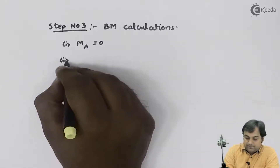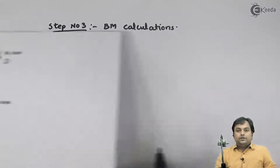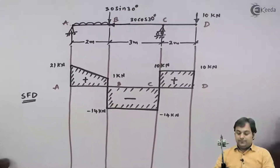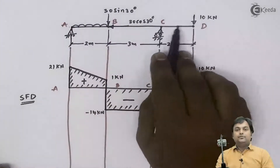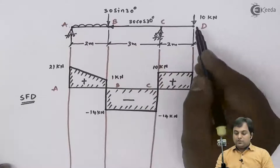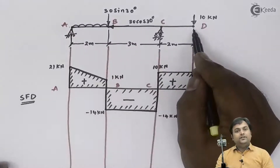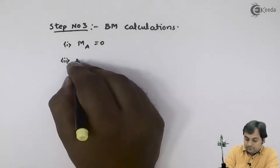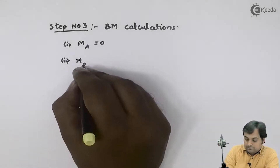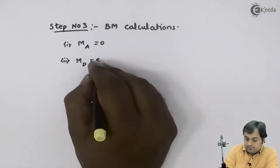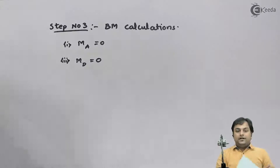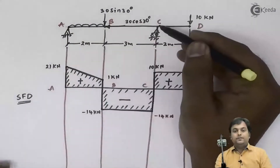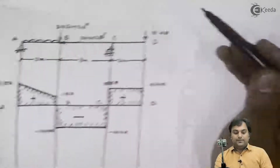Here we have C to D as the overhanging portion of the beam, so at point D the bending moment is zero. Next I need to calculate the bending moment at points B and C. I'll start with point B.